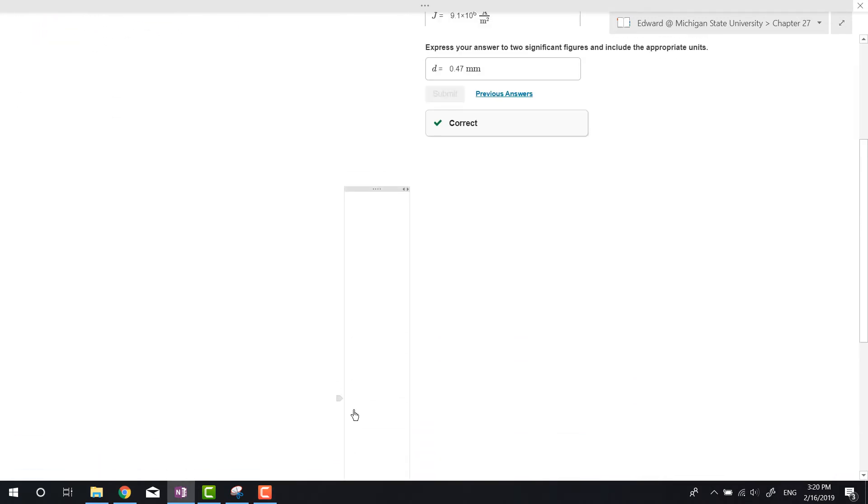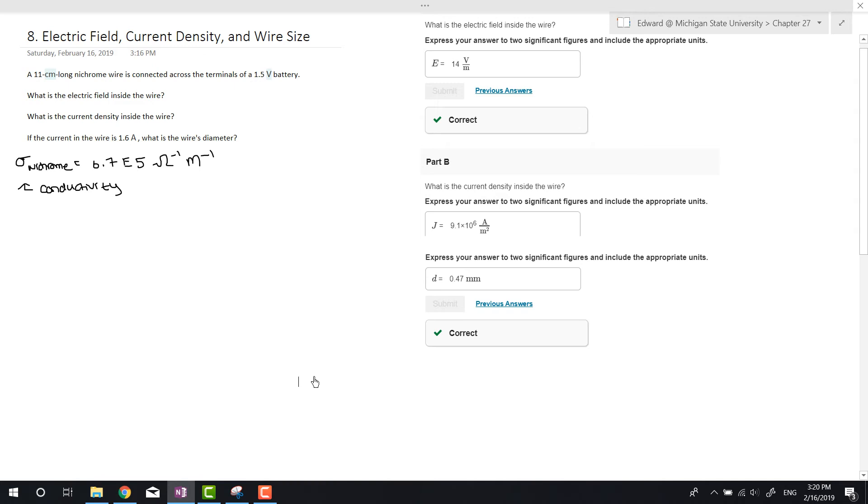Alright, so I'm doing some more Mastering Physics homework, chapter 27 still. This is question number 8. We're given that an 11 centimeter long nichrome wire is connected across the terminals of a 1.5 volt battery. The first question is, what's the electric field inside the wire?